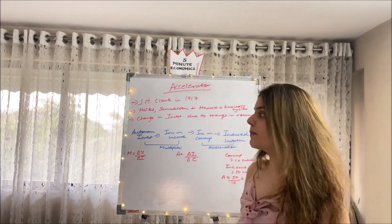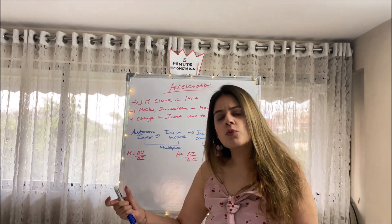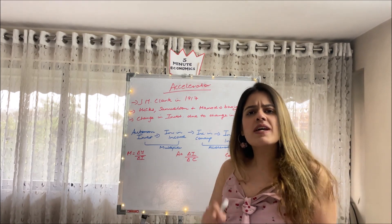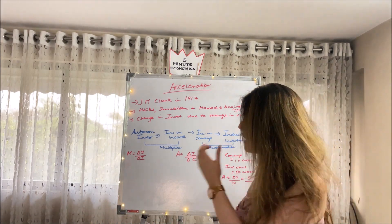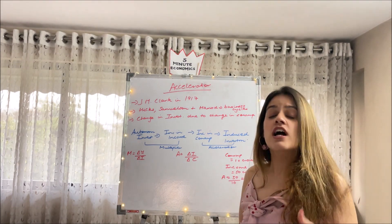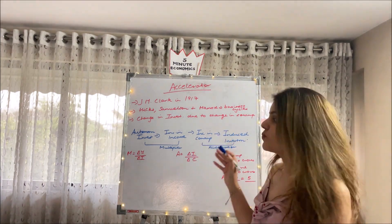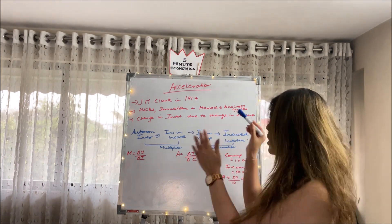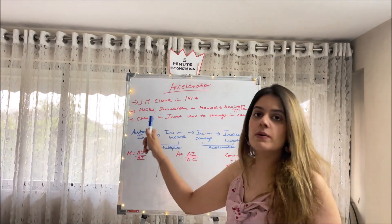In the multiplier analysis, when autonomous investment increases, there is an increase in income much greater than the increase in investment — that's because of the multiplier theory. If we only studied the multiplier analysis, we would be studying an incomplete theory, which is why we also study the accelerator principle. This increase in income in the hands of people further leads to an increase in consumption, which further leads to an increase in investment — but this time the investment is induced, not autonomous. This part of the cycle is all because of the functioning of the accelerator.